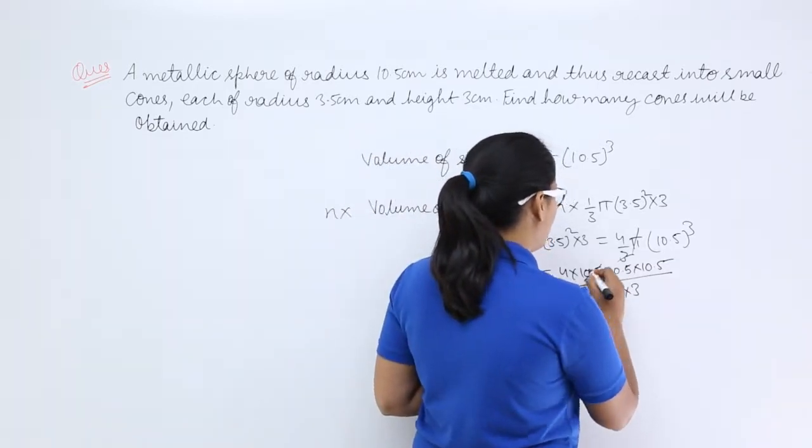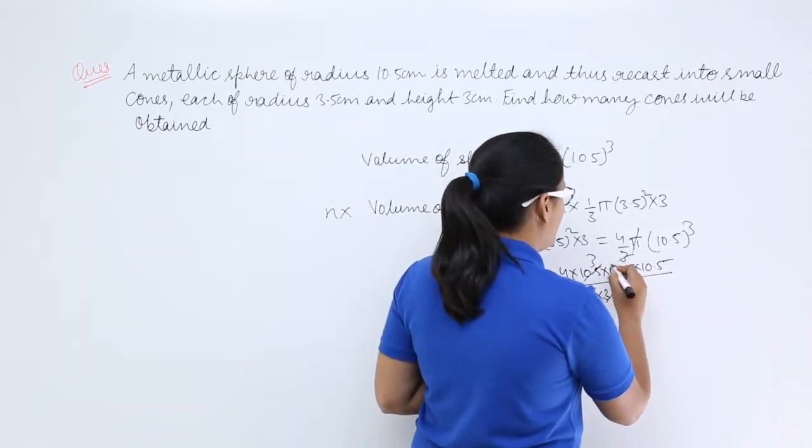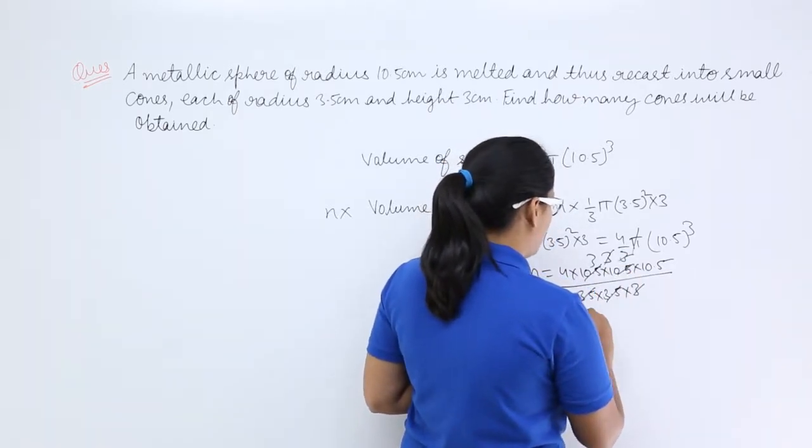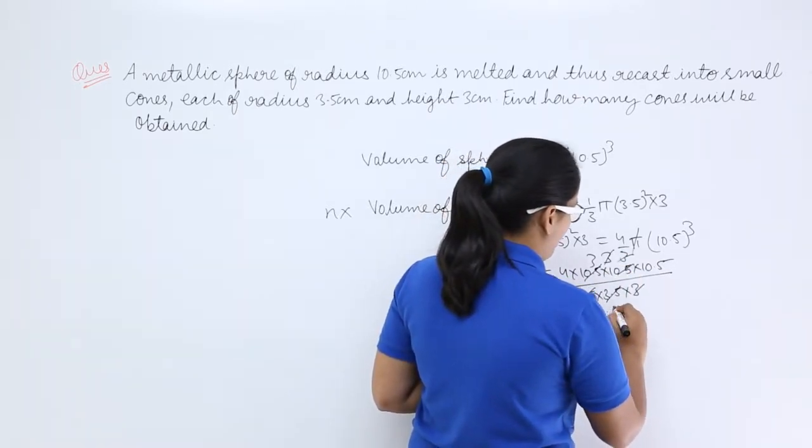So here when you divide this you will get 3. When you divide this again you will get 3. 3 and 3 will get cancelled out. And you will get this.